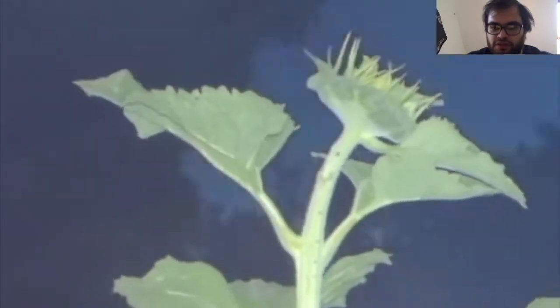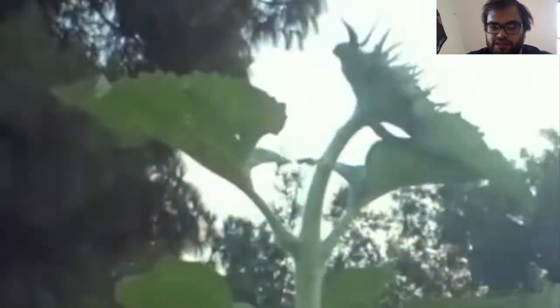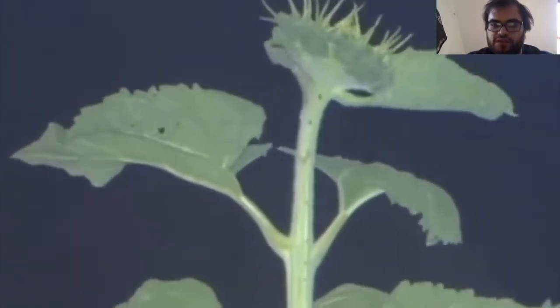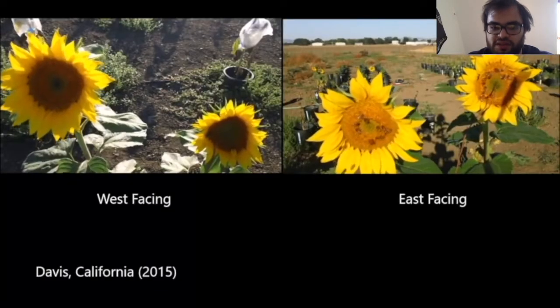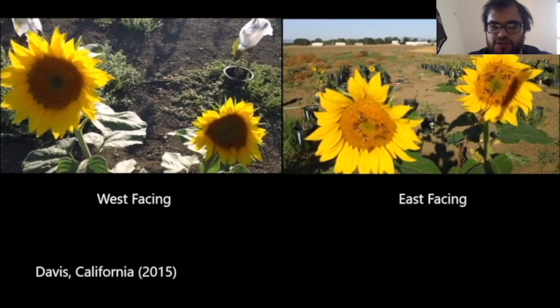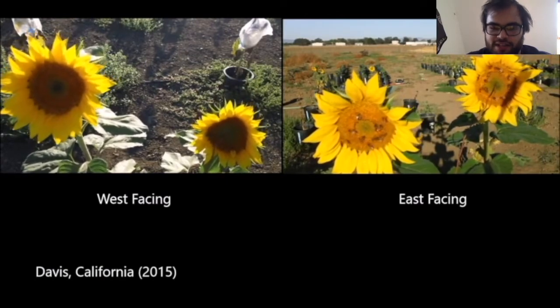You may have heard that sunflowers track the sun — that is true. One side of the stem grows faster than the other during the day, and it reverses at night. This allows the sunflower head to face east in the morning and west in the evening, following the sun. When sunflowers finally stop growing, they face east — probably because flowers that face east attract more pollinators than those facing west. Plant scientists are still studying why and how this happens. Yay science!